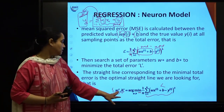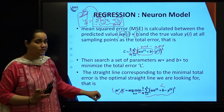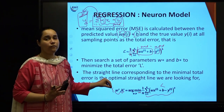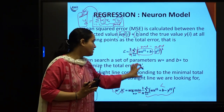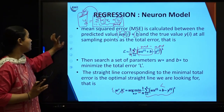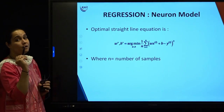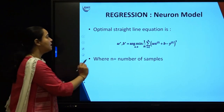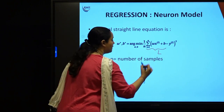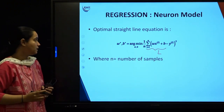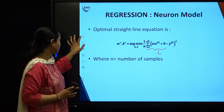The weight star and bias star — the updated, correct, best parameters — are those of the line which gives the minimum value of L. The optimal straight line equation for the simple regression neuron model is a line with weight and bias equivalent to the argmin value of this total error L, calculated over n samples.